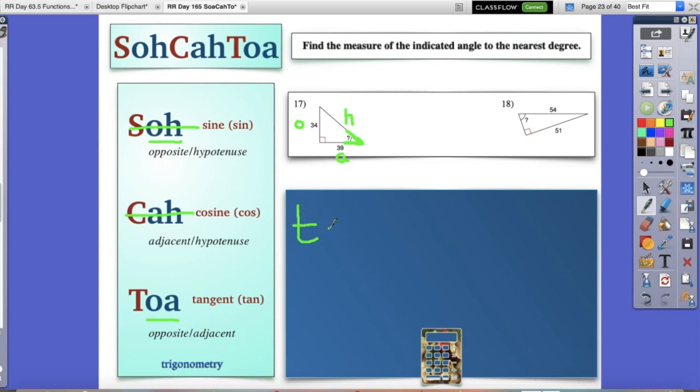So you would write this tan, and we'll call it angle x for now, equals, and again, it's the opposite side, so 34 on top, and 39 is your denominator. Get your calculator out, 34 divided by 39. Use that inverse button, just like we learned yesterday, and you will get that correct.